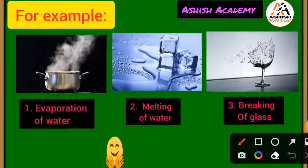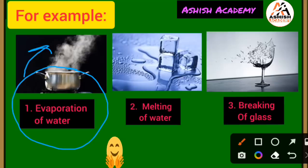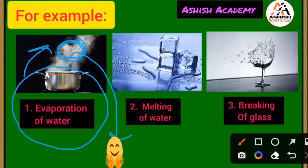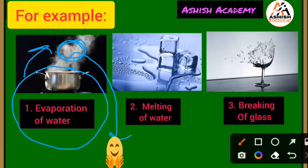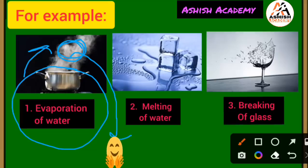There are many examples. For example, evaporation of water — pani ka bhaap ke roop mein badalna (water changing into steam). Water evaporates, and when it condenses and comes back down, that is called precipitation, so we get water back in its original state. No new substance is formed because when condensation occurs, the steam becomes liquid water again. So no new substance is formed.